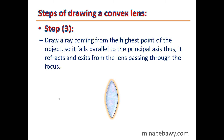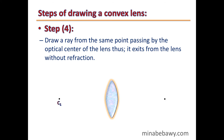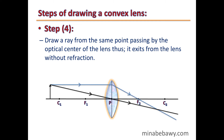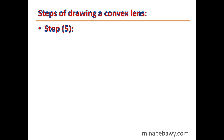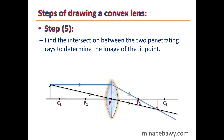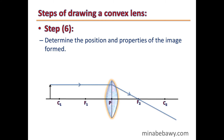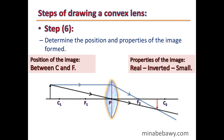Step 3 — draw a ray coming from the highest point of the object parallel to the principal axis. Step 4 — draw a ray from the same point passing through the optical center of the lens, which exits without refraction. Step 5 — find the intersection between the two refracted rays to determine the image of the top point. Final step — determine the position and properties of the image formed. In this case, the image is located between C and F, and the image is real, inverted, and small.